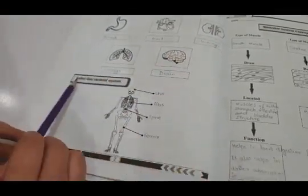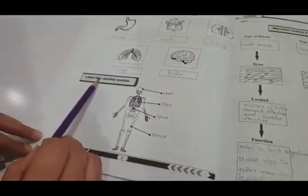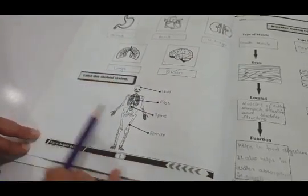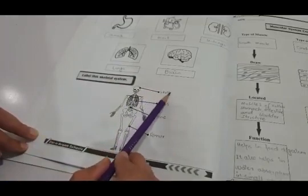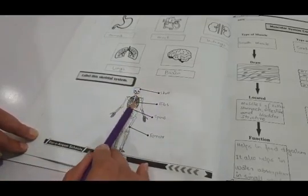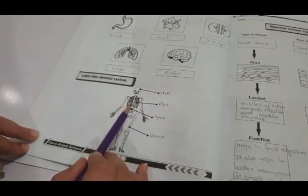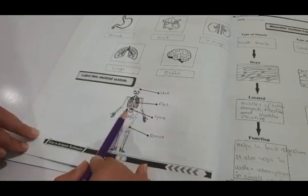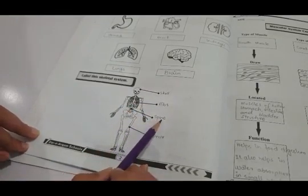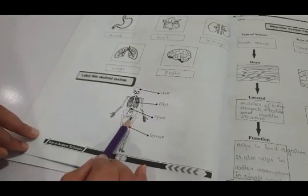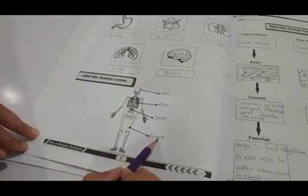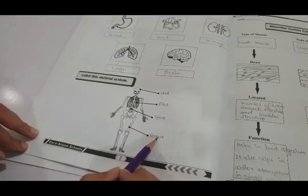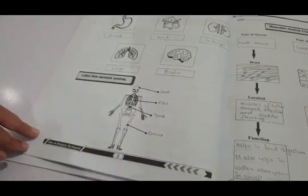After that we have a question: label this skeletal system. See over here — this is your skull, which is protecting your brain. These are your ribs in the rib cage, protecting your heart. This is your spine. And this is your femur, which is the strongest bone in the body.